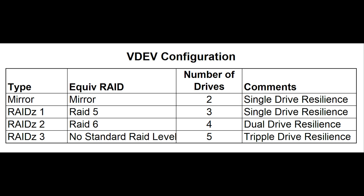With RAID Z2, you need a minimum of four drives — two drives for capacity and two drives for fault tolerance. More drives used in this configuration increase capacity, but you still only get two drives of fault tolerance. With RAID Z3, you need five drives or more — two drives for capacity and three drives for parity, providing three drives of fault tolerance.